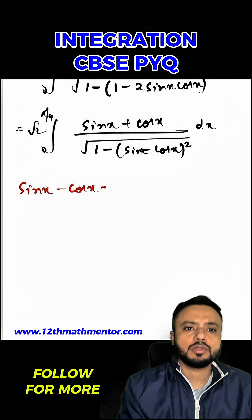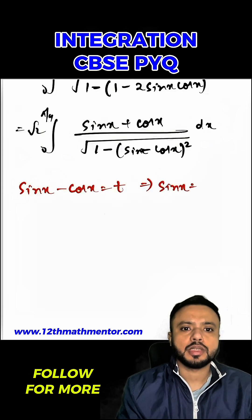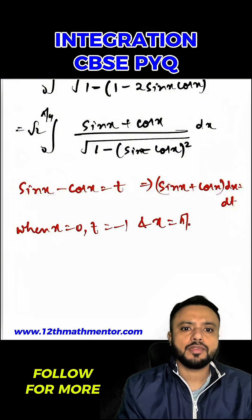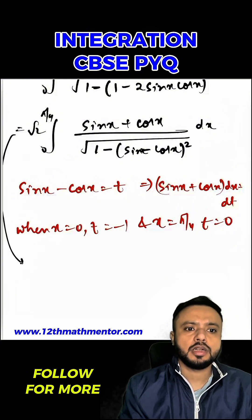And now I'm going to take the substitution which is sine x minus cos x equals to t. So from here I can say sine x plus cos x dx will be equal to dt, and when x equal to 0, t equal to negative 1, and when x equal to pi by 4, t equal to 0.